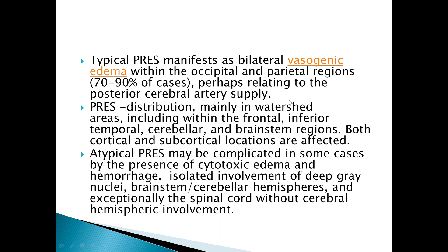In PRES, distribution is key — it is mainly present in the watershed areas, including frontal, inferior temporal, cerebellar, and brainstem regions, with both cortical and subcortical locations affected. In atypical PRES, complications are present due to cytotoxic edema and hemorrhages. There may also be isolated involvement of deep gray matter nuclei, brainstem, cerebral hemispheres, and exceptionally the spinal cord without cerebral hemispheric involvement.